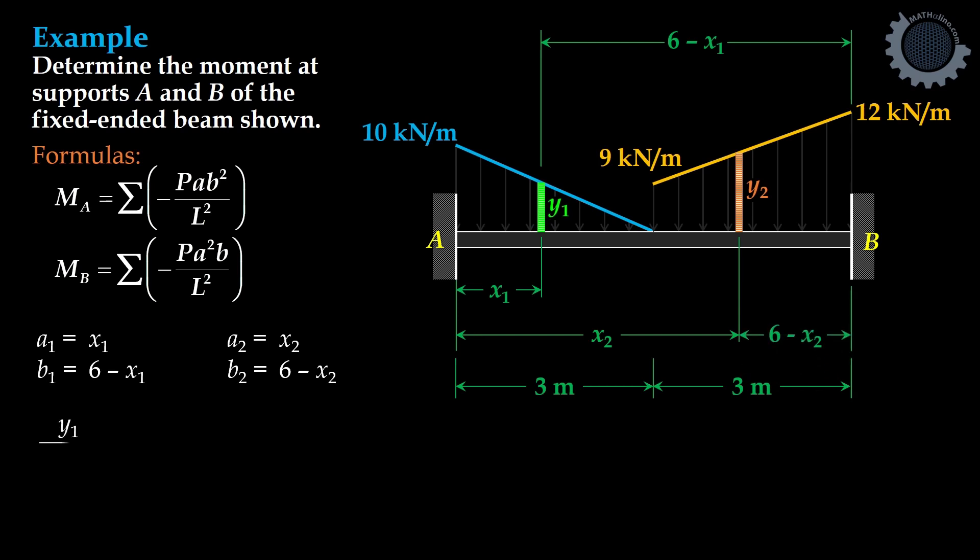By proportion, we have Y1 as to 3 minus X1 equal to 10 as to 3. So we have the value of Y1: 10 minus 10 over 3X1.